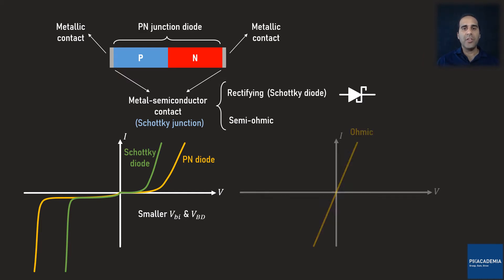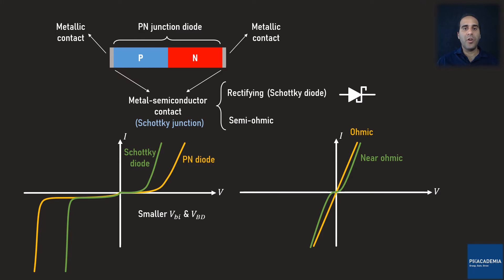On the other hand, the current voltage diagram of an ohmic device such as a resistor looks like a straight diagonal line, which implies that the resistance of the device remains intact at any given voltage or current. However, when it comes to a metal semiconductor junction designed to behave as an ohmic contact, what we can see in the current voltage diagram is a curve which is semi-straight far from the origin but bent around the origin. Since the resistance at all voltage and current levels is not constant, this behavior is called semi-ohmic.